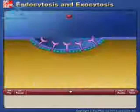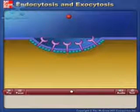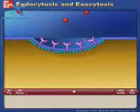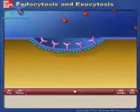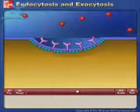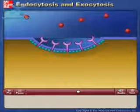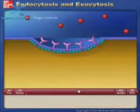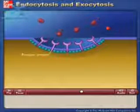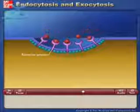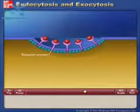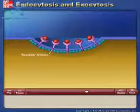Specific molecules, such as low-density lipoproteins, are often transported into eukaryotic cells through receptor-mediated endocytosis. Molecules to be transported first bind to specific receptors on the plasma membrane. The interior portion of the receptor protein is embedded in the membrane.